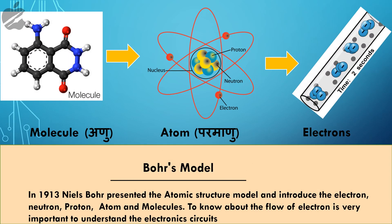In 1913, Niels Bohr presented the atomic structure model and introduced the electron, neutron, proton, atoms and molecules. To know about the flow of electrons is very important to understand electronic circuits.